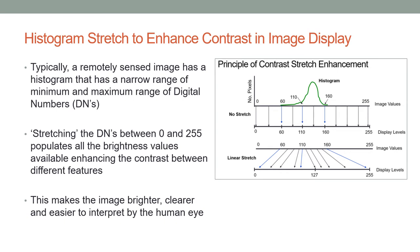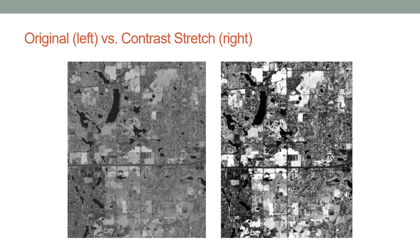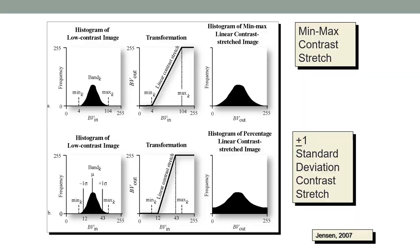If you stretch the histogram — extending the minimum and maximum all the way to zero and 255 respectively — you populate the darker and brighter digital numbers, and the image becomes brighter, clearer, and the contrast increases between different features, making it easier to interpret by the human eye. Here is an example comparing an original black-and-white image with a contrast-stretched image, where the contrast is clearly increased, allowing more distinct discernment of different features.